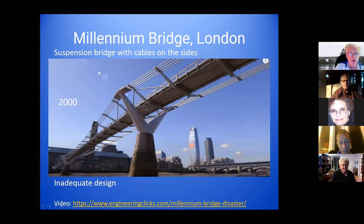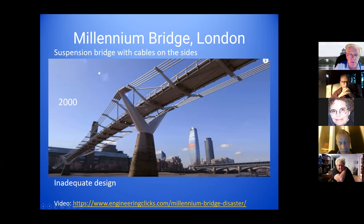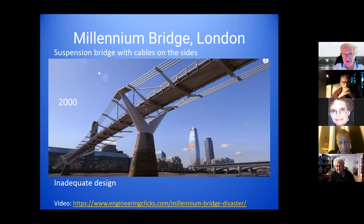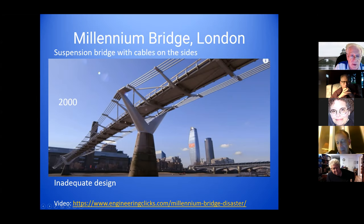The Millennium Bridge in London, built in 2000, is a suspension bridge with suspension cables on the sides so as not to interfere with pedestrians' views. Unfortunately, when people started walking on the bridge, it moved a little bit, and crowds started walking side to side in synchrony, causing the bridge to sway much too much. They closed it. The engineers had not considered this in their design. The fix was putting dampers on the members, which damped the motion and made the bridge usable.